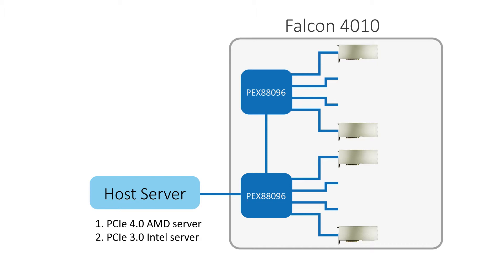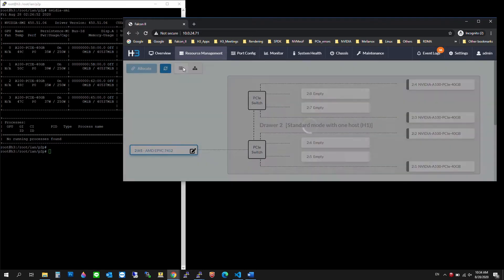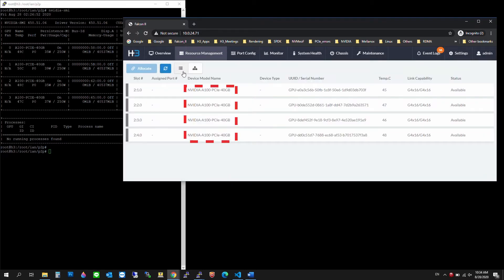We have installed the graphics cards in our expansion chassis and connected the chassis to the two hosts. We have assigned each host 4 A100 GPUs, as shown in the system topology diagram.